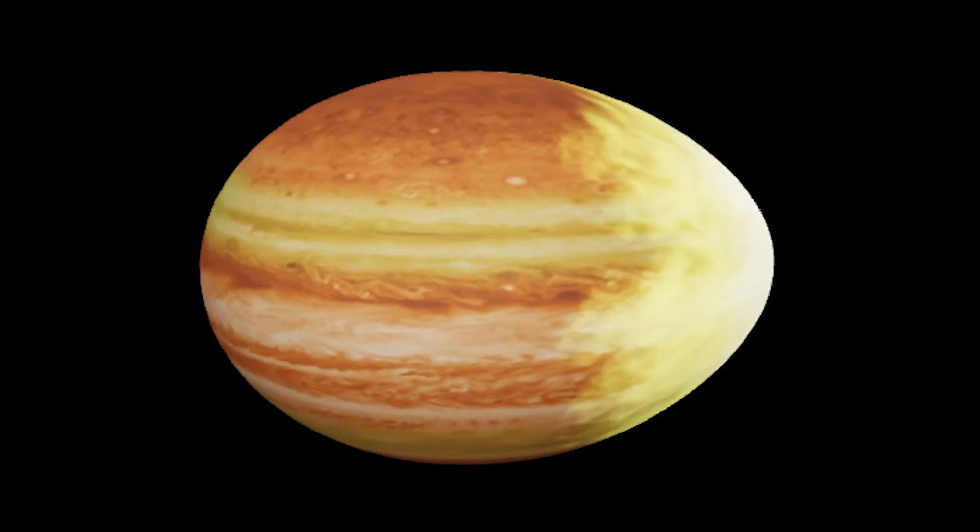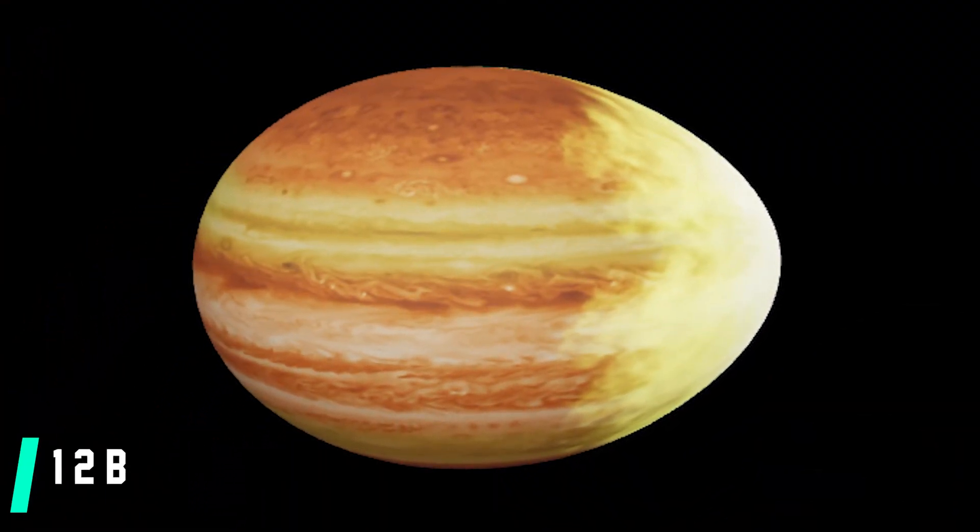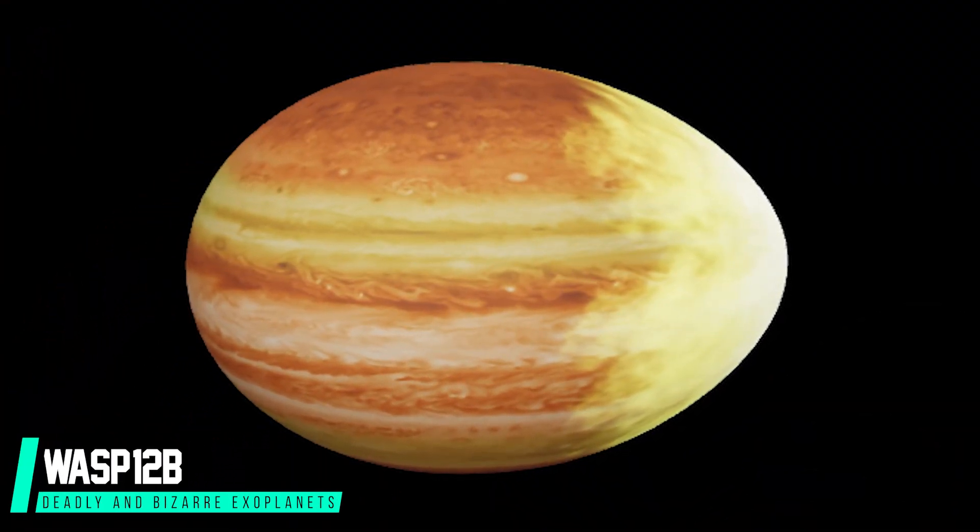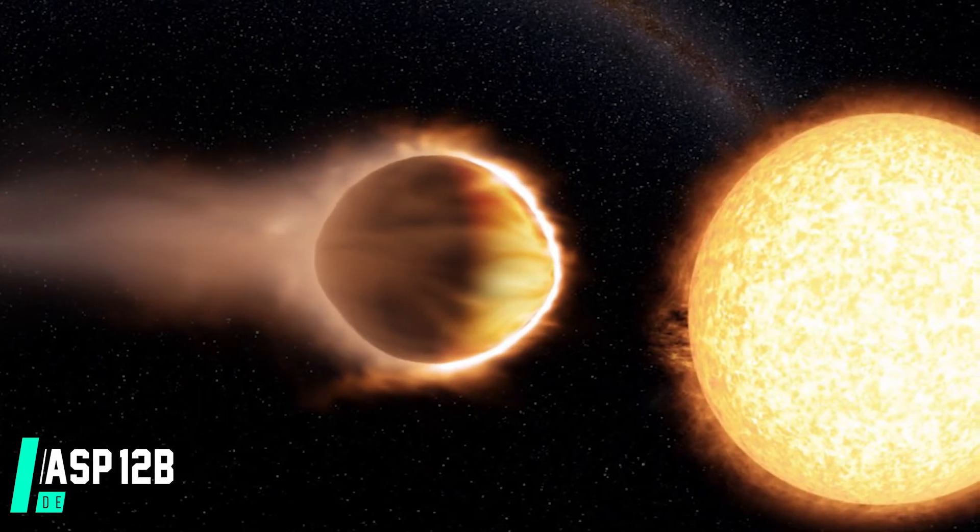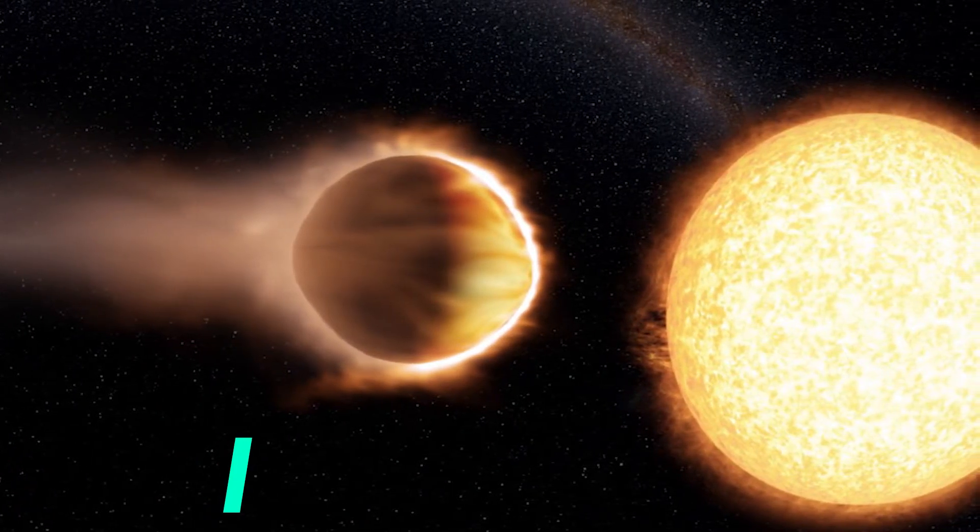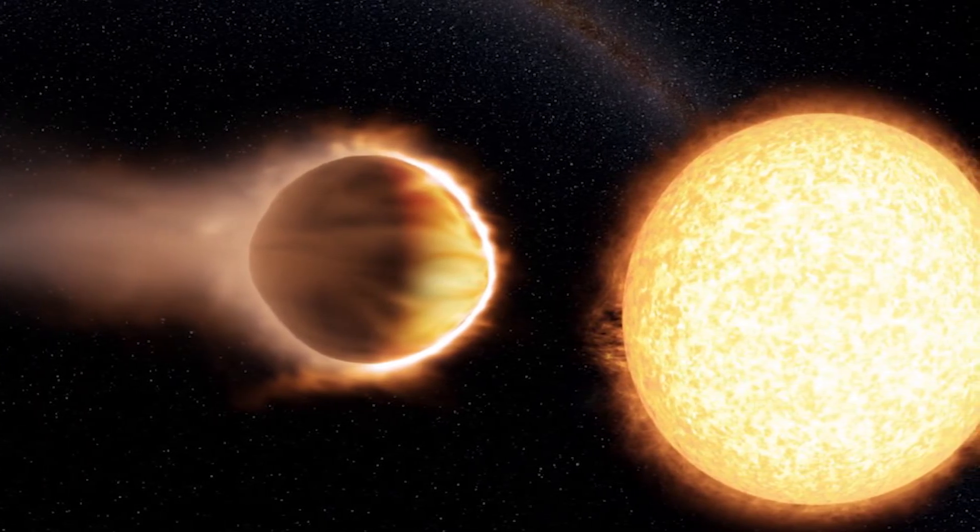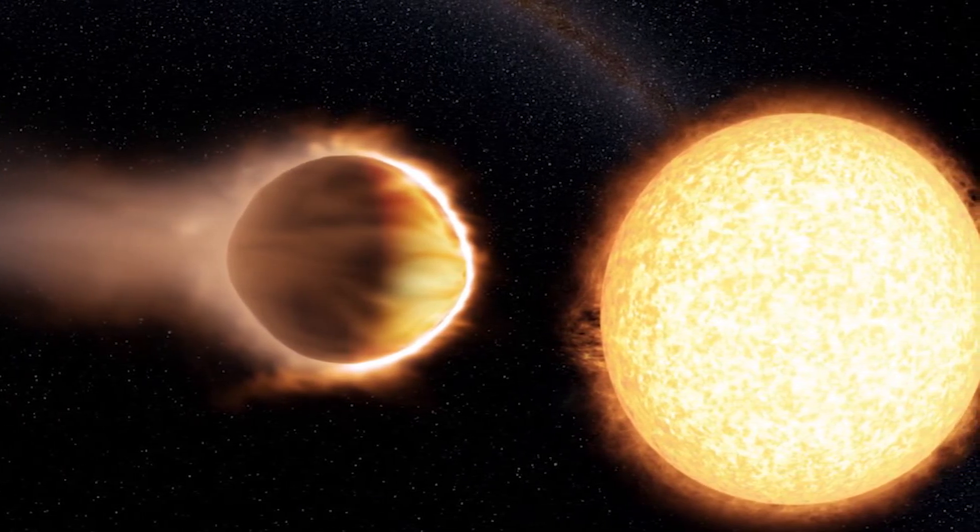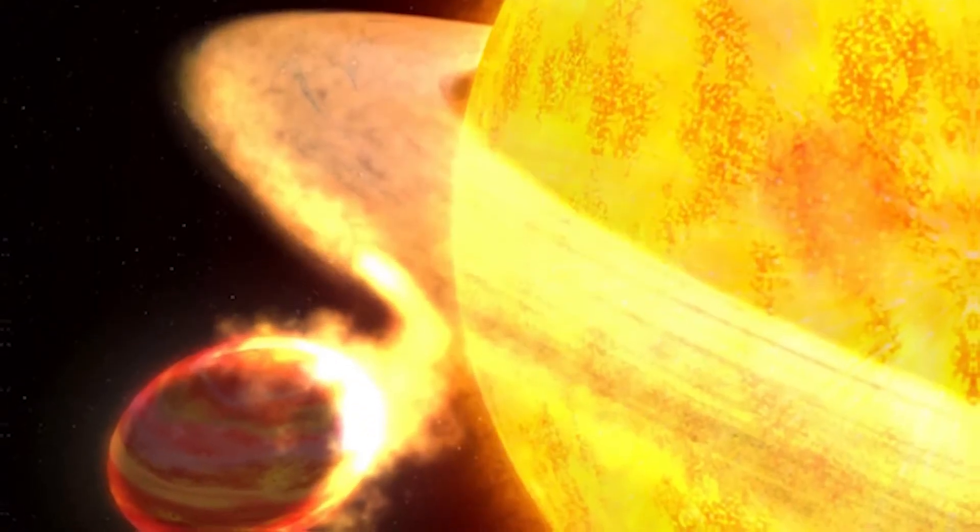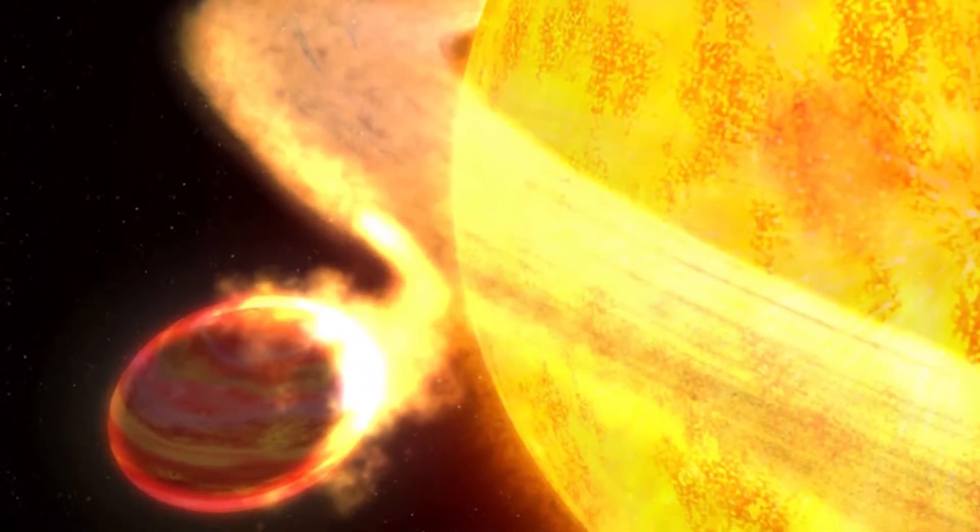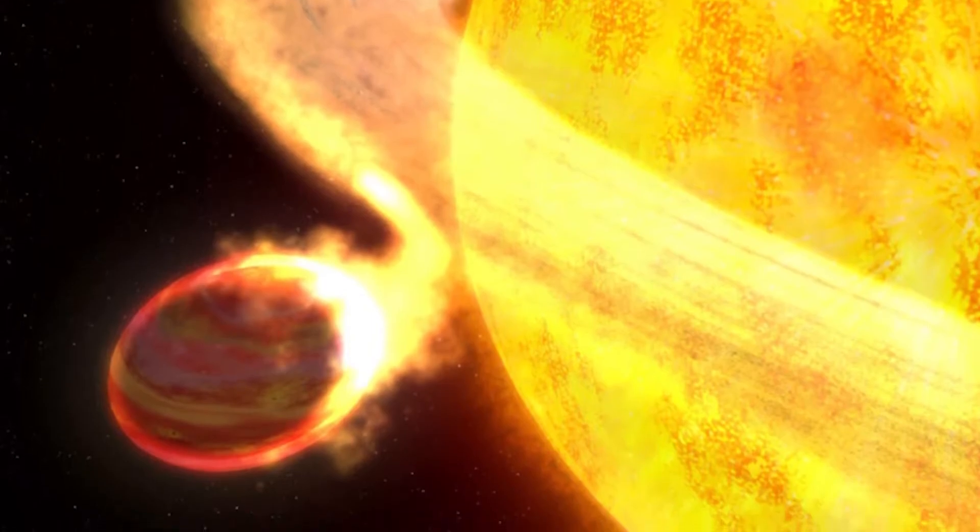Number nine. This exoplanet is probably the closest thing we will see to a giant egg being cooked in space. In 2008, NASA scientists identified this strange extrasolar planet orbiting so close to its Sun-like star that it is being stretched by the Sun's gravity into the shape of an egg. This planet, designated WASP-12b, is a gas giant about twice the size of Jupiter.